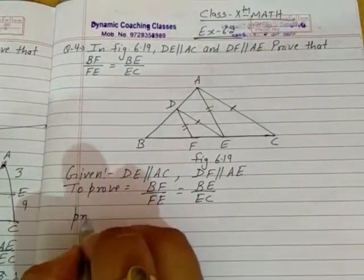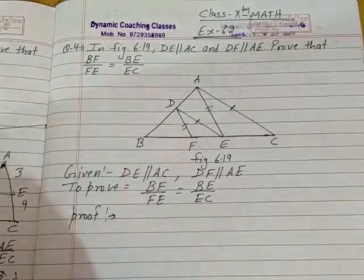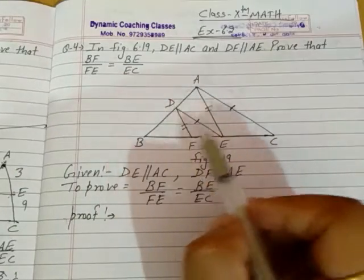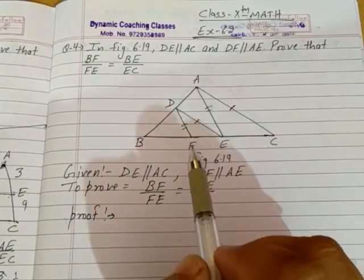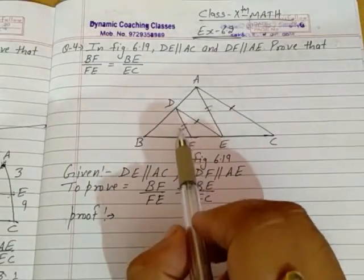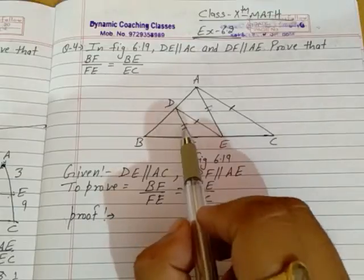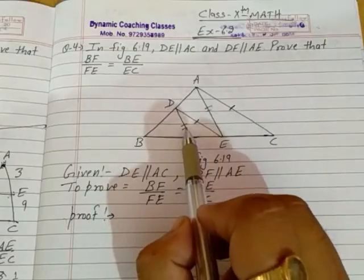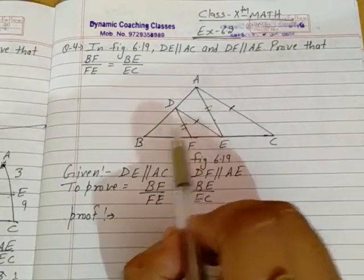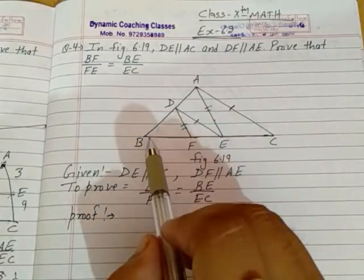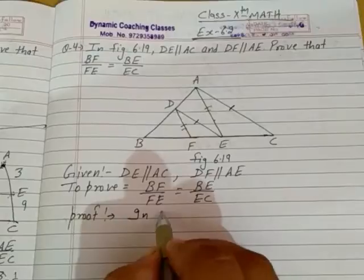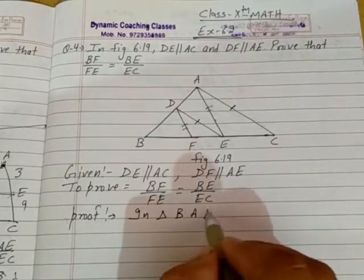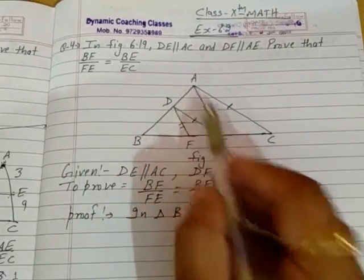First, consider the triangles. For the parallel line DF parallel to AE, consider triangle BAE.